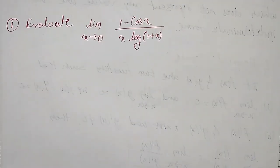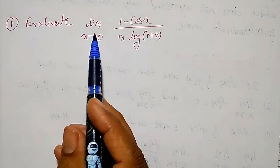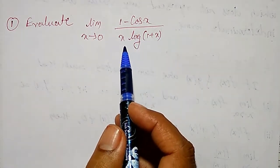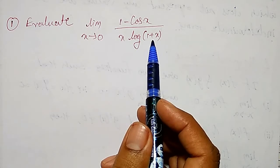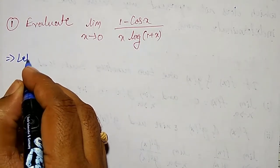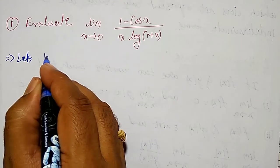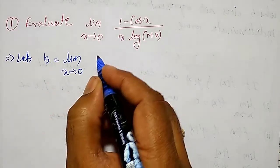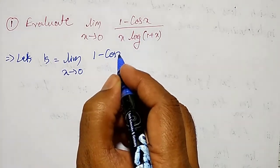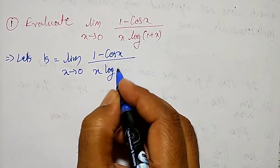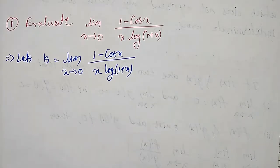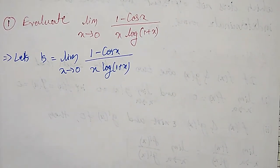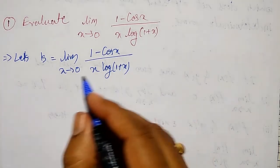Welcome friends. In this video I am going to evaluate the limit as x tends to 0 of (1 minus cos x) divided by x into log of 1 plus x. Let this equal k, so k equals the limit as x tends to 0 of 1 minus cos x divided by x into log of 1 plus x. Let us check whether it is a finite value or an indeterminate form.